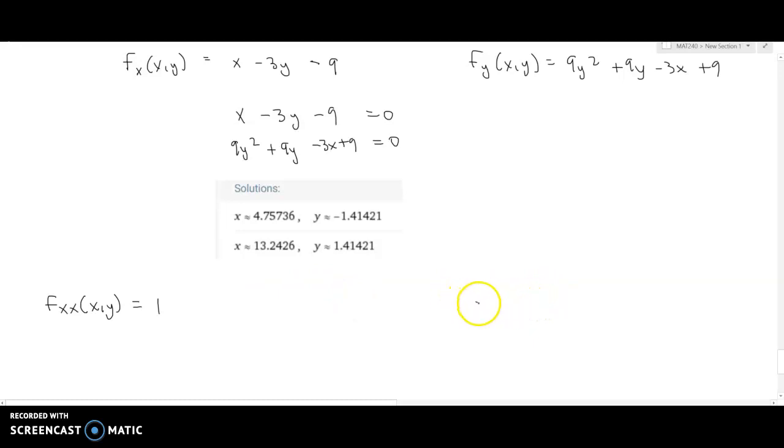And the partial with respect to y, the second derivative, is going to be, let's see, 9y squared, its derivative is going to be 18y plus 9 minus 0 plus 0. And you can see that now this is the first time that we've seen the second derivative come out to be a function as opposed to a constant. So we will need to substitute in our values.